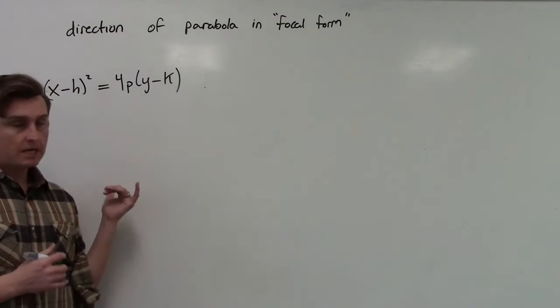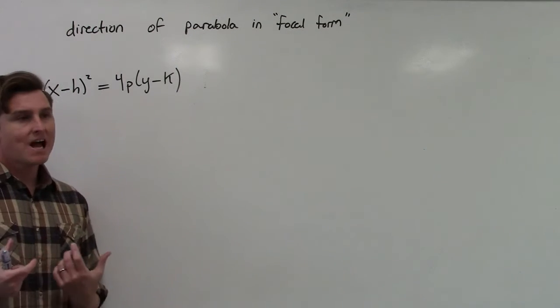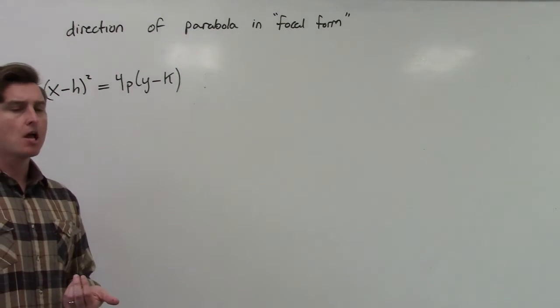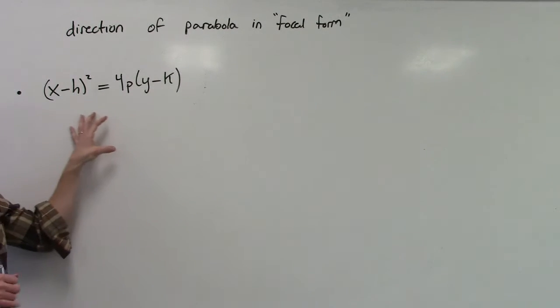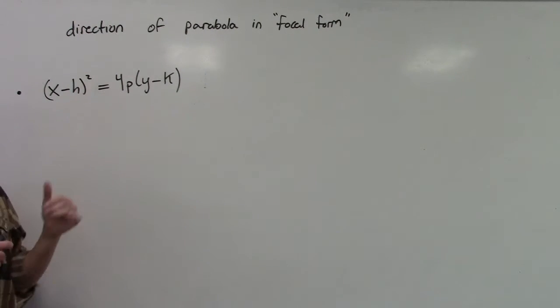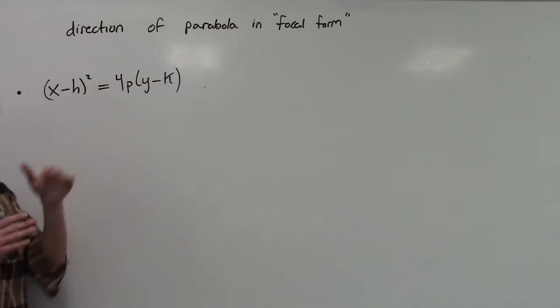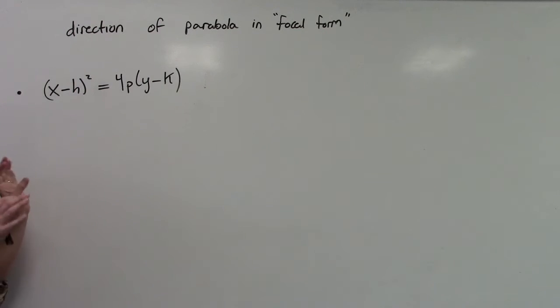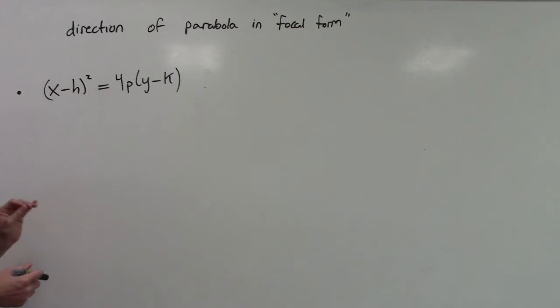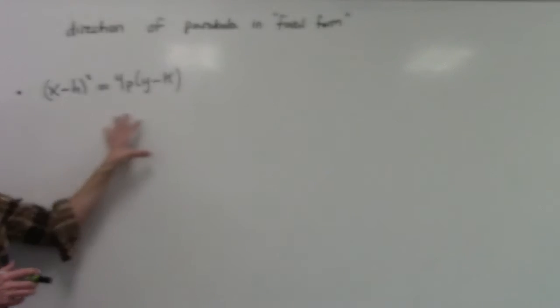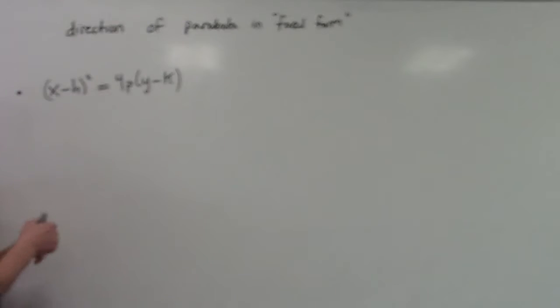One of the things we need to talk about when discussing parabolas in focal form is how to determine which direction they open. This is the focal form of the parabola we talked about in previous videos, where h and k are the vertex and 4p is the focal width. This is just the original version — a standard parabola that opens in the vertical direction.